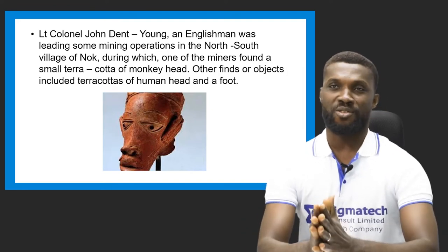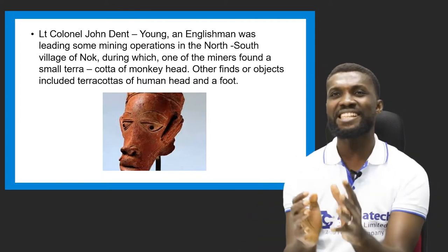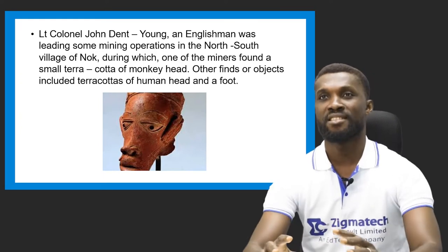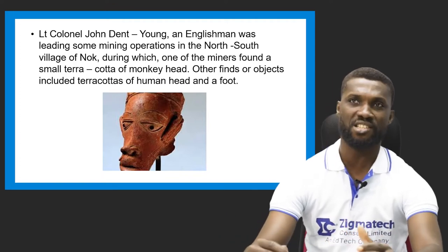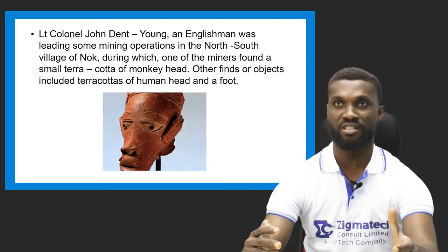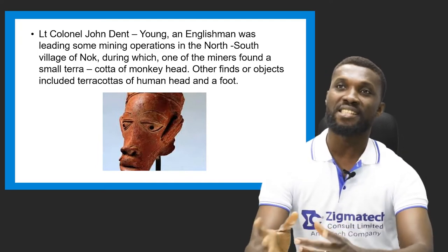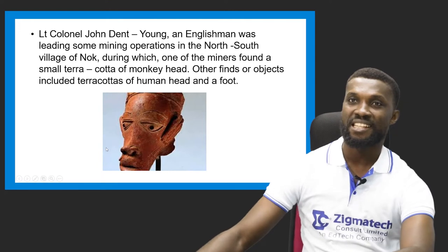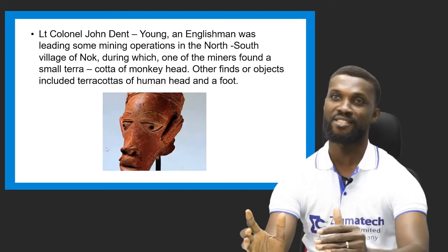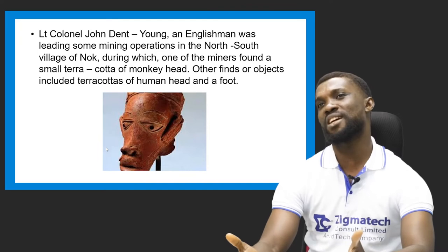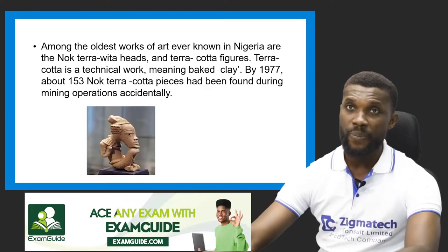There was an archaeologist — a miner — called the late Colonel John Dance Young, an Englishman who was leading some miners to an operation in a northern village in Nok. During this period, one of his men discovered a sculptural work called terracotta. Other objects also found were the terracotta head and a foot, to mention but a few. Amongst the oldest works of art known in Nigeria are the Nok terracotta and the Nok terracotta figure.